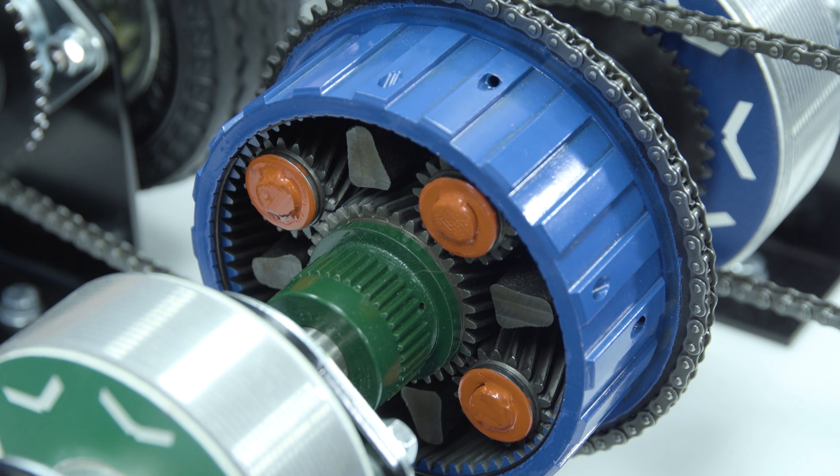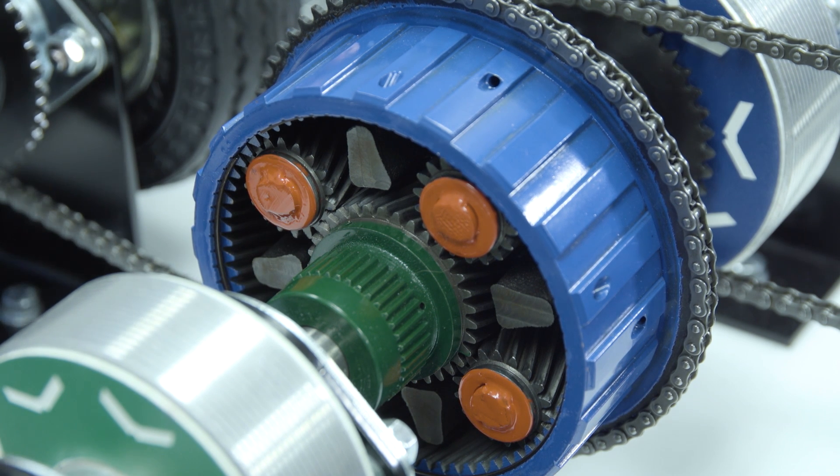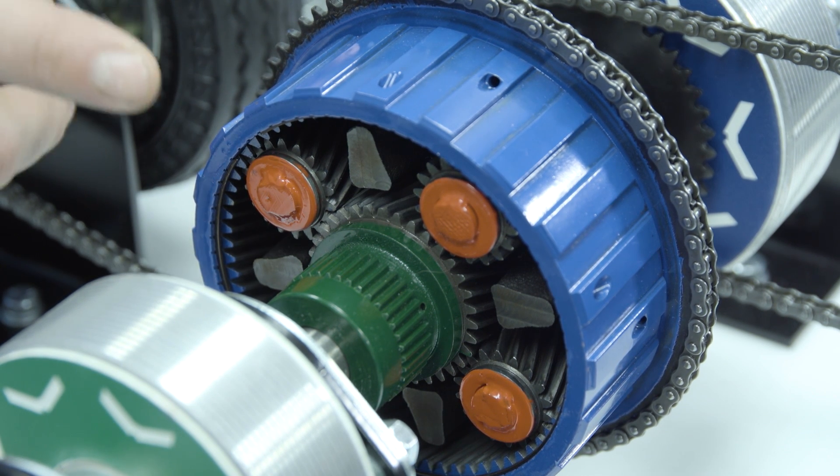Now that we've looked at each of the components individually, let's bring it all together in the planetary gear set where the magic really happens. We have three main components in the planetary gear set.